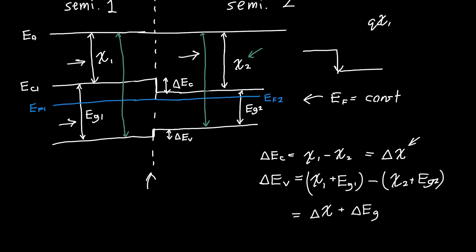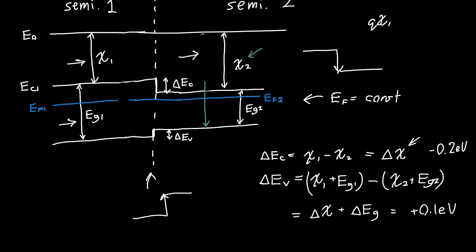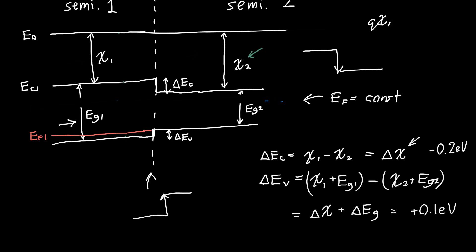As drawn here, delta Ec is a negative quantity — maybe minus 0.2 eV — and delta Ev is some positive quantity because we are going up in the valence band, maybe plus 0.1 eV. Now, you might rightly say: two semiconductors when brought together are almost never going to have the same Fermi level, so what happens when the two are different? Let's figure that out. Let's imagine our first semiconductor has a Fermi level near the valence band, so before contact it has some Fermi level down here.